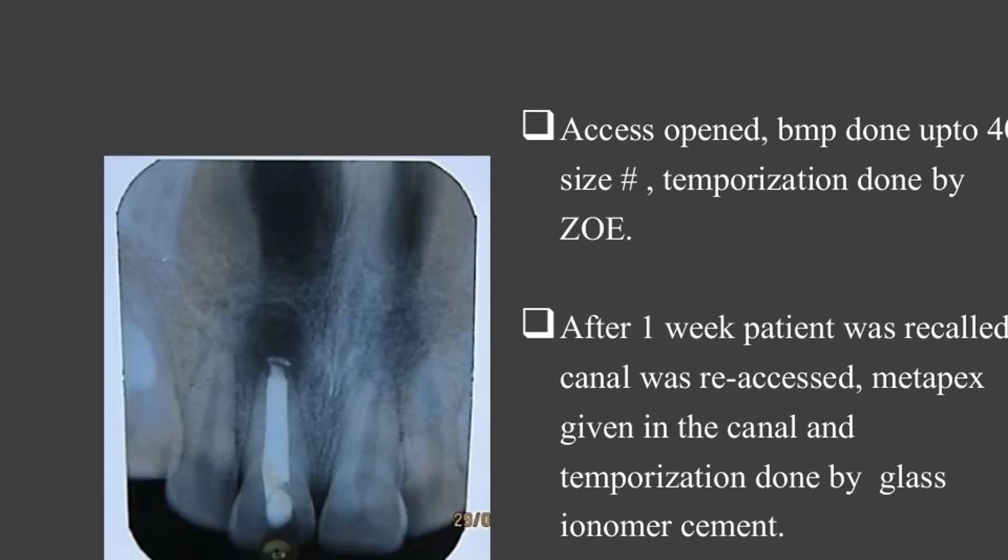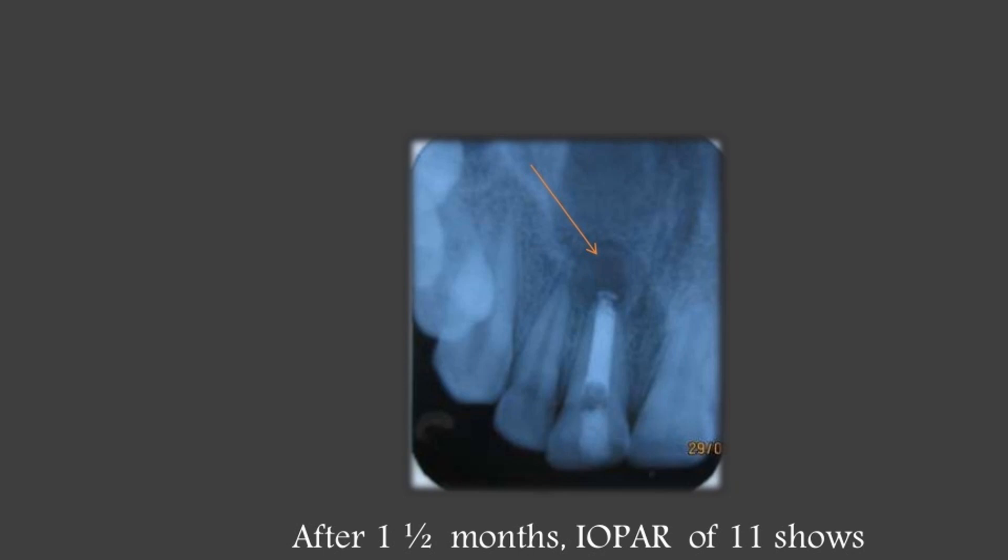Access was opened. Biomechanical preparation (BMP) done up to size 40. Temporization done with ZOE. After one week, the patient was recalled, canal was re-accessed, Metapex given in the canal, and temporization done with glass ionomer cement.